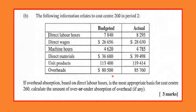Our approach should be: first, calculate the POHR (pre-determined overhead rate), then apply it to find the overhead applied. Once we get the applied overhead, we can compare it with the actual overheads to see if there was any under or over absorption.